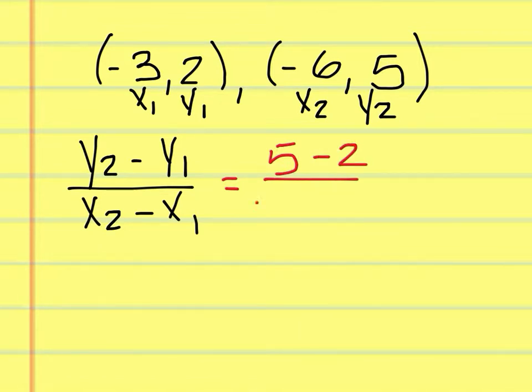5 minus 2 over negative 6 minus negative 3. That would be 3 over negative 3, which equals negative 1.